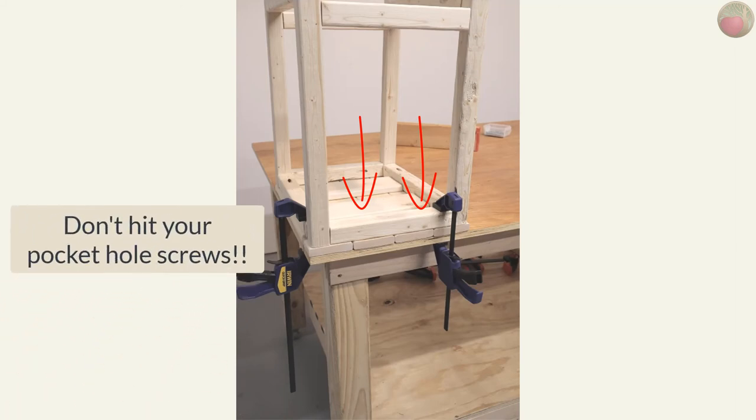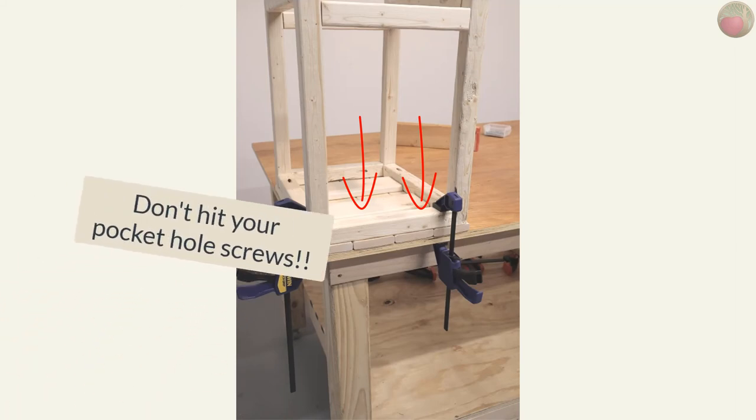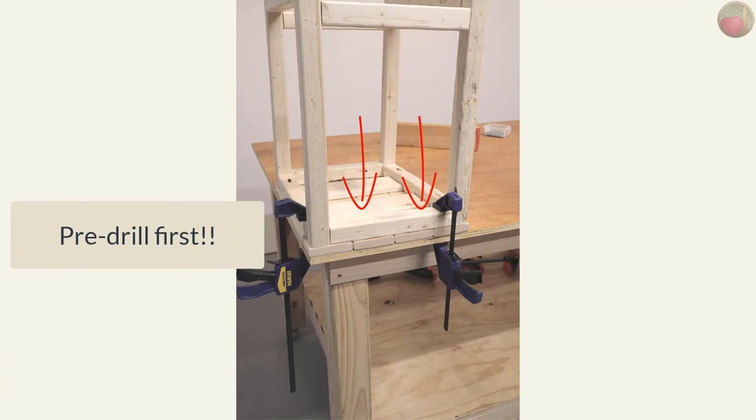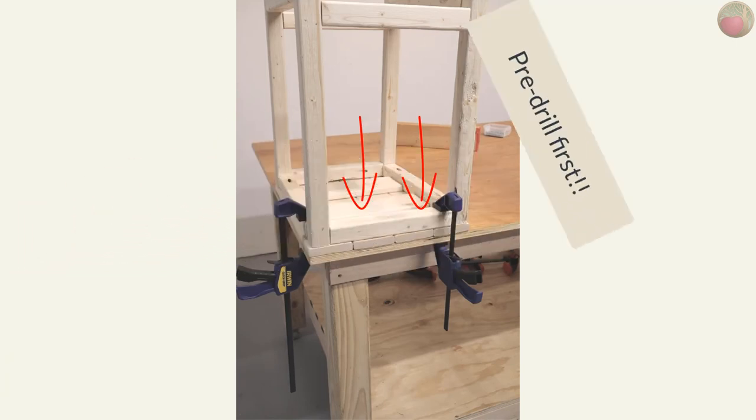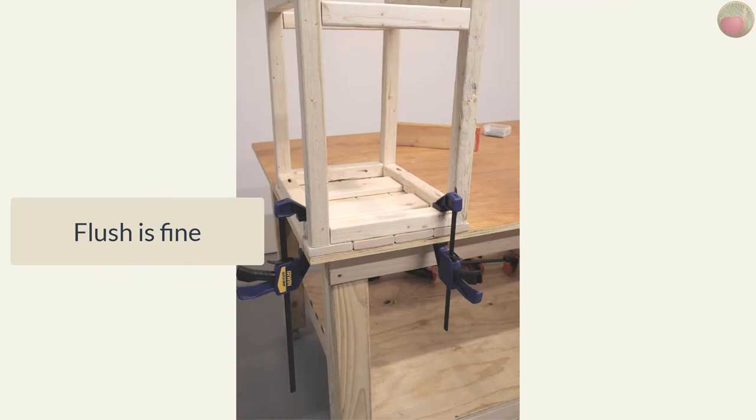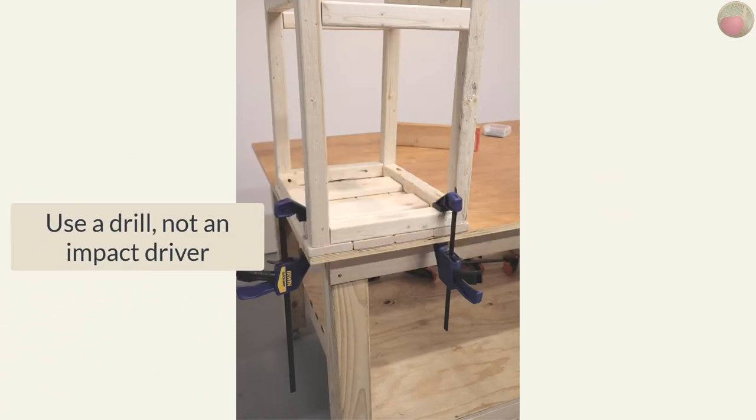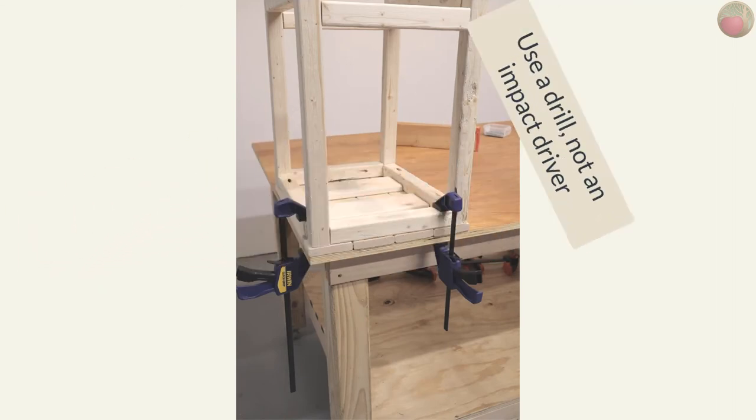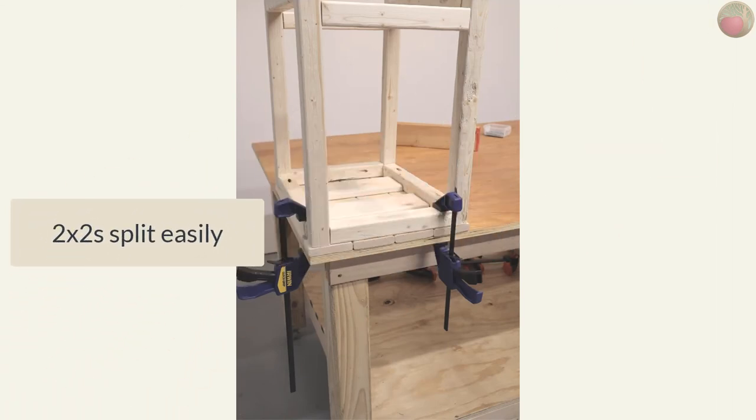And then I used at least two screws per rail. Now be careful not to hit your pocket hole screws, and be sure to pre-drill these holes first. And you can countersink if you like too, but they will be on the bottom and no one will see, so flush is fine. Now even though I pre-drilled, I also used my drill instead of my impact driver to drive the screws to ensure there was no chance of splitting that wood.